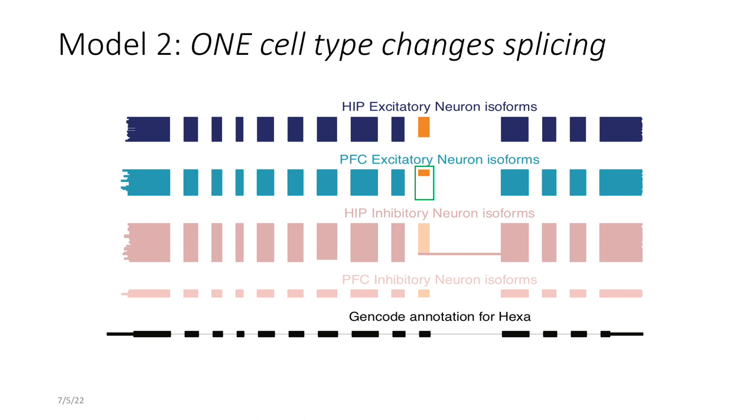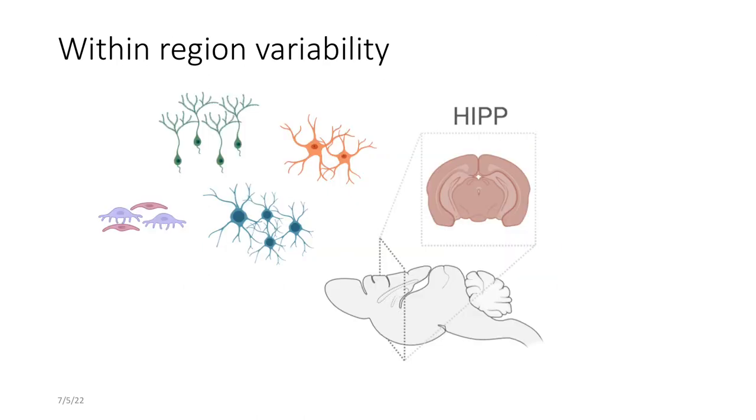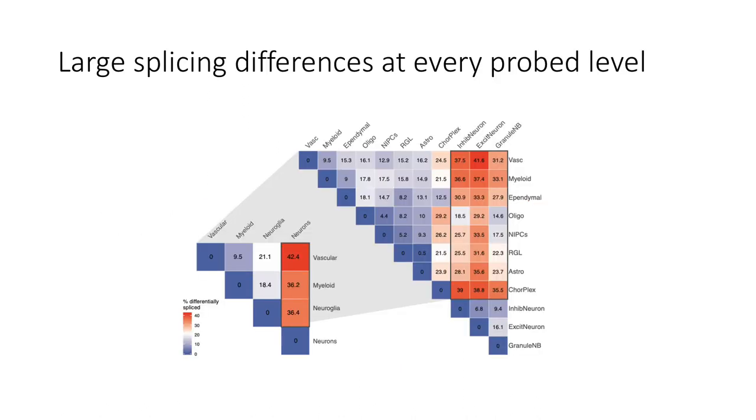Next we looked at within region variability. So within the hippocampus if you have multiple cell types what are the isoform patterns? So of course what we found was that the neurons are very different from non-neurons and this is true for multiple degrees of granularity.